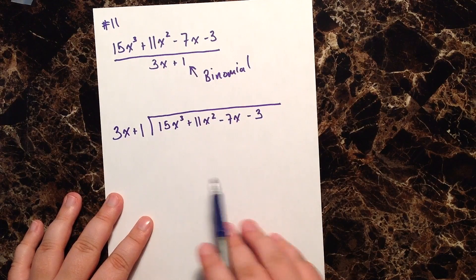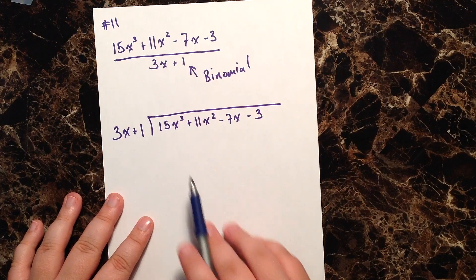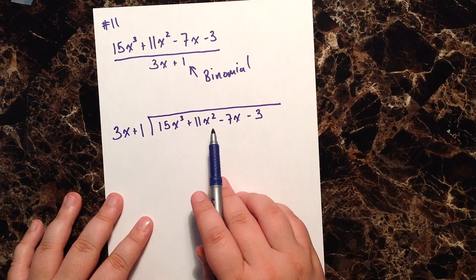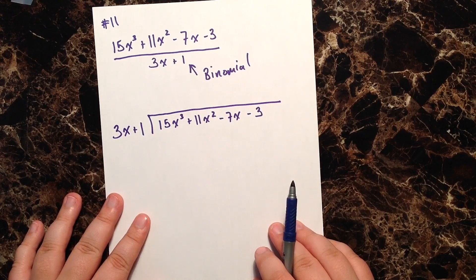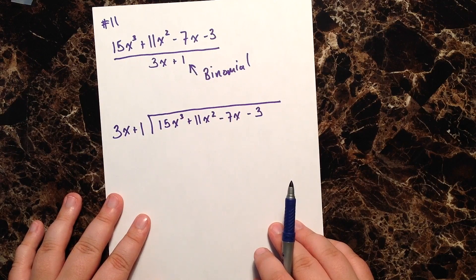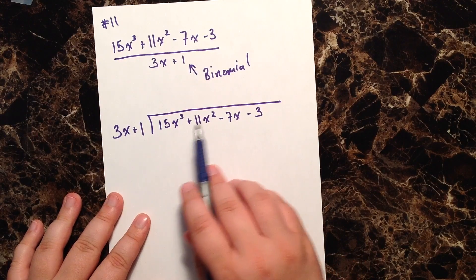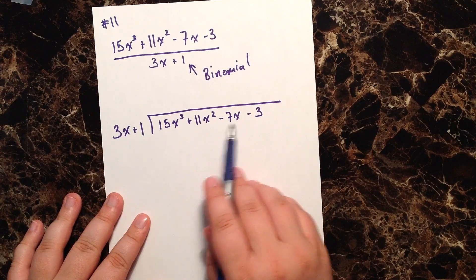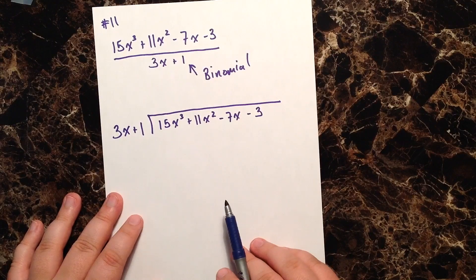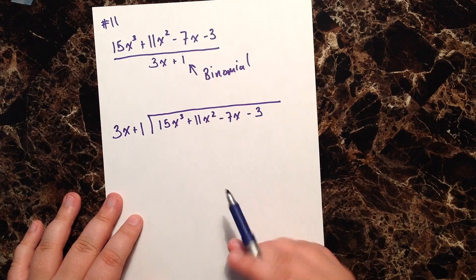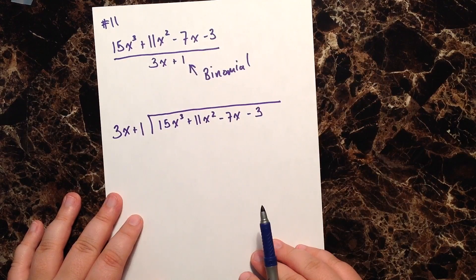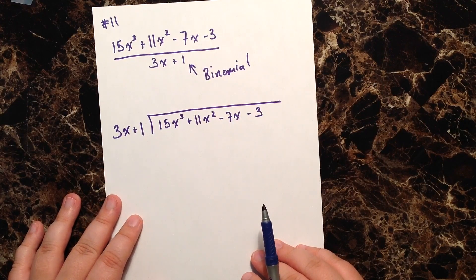In this case, however, we go from three to two to one to zero and so we're okay here. But just keep an eye out for that on the final, that if you are missing, if we skip or jump a degree on our way down, you are going to have to fill it in yourself with a zero x and then whatever the degree that's missing.